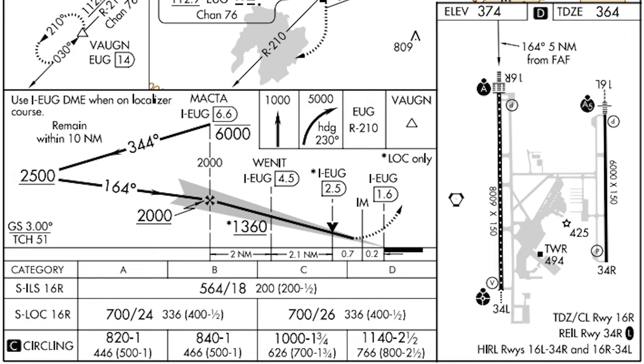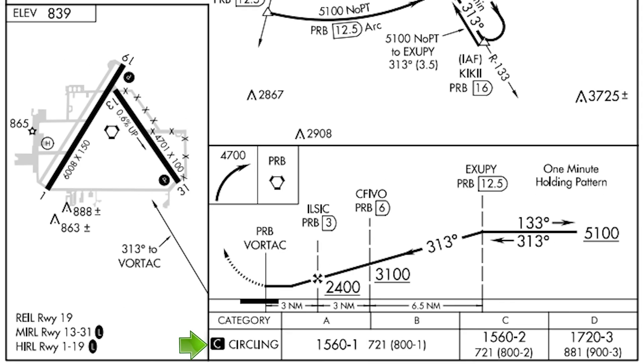When an instrument approach serves a particular runway, a TDZE will be shown, as it is in this example. However, if an approach is to circling minimums only, there will not be a TDZE inside the airport sketch on the approach plate.